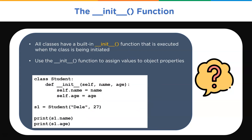The __init__ method is similar to constructors in C++ and Java. All classes in Python have an init function — it is always executed when the class is being initiated. You can use the init function to assign values to object properties or perform other operations necessary when the object is created. For example, using the init method with parameters self, name, and age, we can create an object s1 passing in name 'Delay' and age 27, then print the name and age.